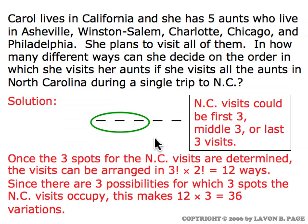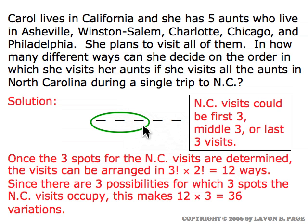To finish, the only additional thing we have to consider is that the North Carolina cities don't have to be in the first three spots. They could be the three middle spots or they could be the final three spots. Each of those possibilities would give us twelve additional ways of planning her itinerary. So we would have twelve ways with NC first, plus twelve more with NC in the middle, and twelve more with NC last — giving a total of thirty-six itineraries where the North Carolina cities are all visited together.